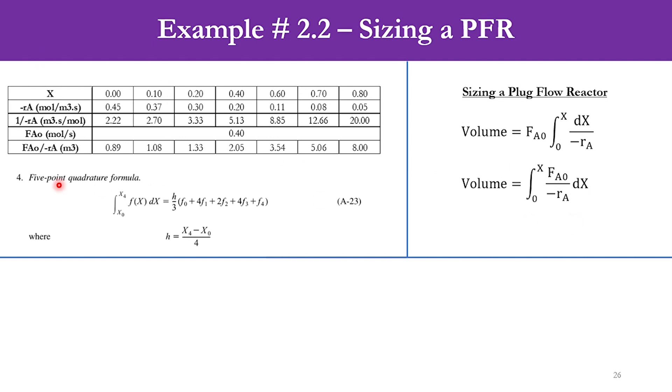What does the five-point quadratic formula say? For x0 to x4, integral of f(x) dx equals H over 3 times (F0 + 4F1 + 2F2 + 4F3 + F4), where H equals upper limit minus lower limit divided by 4.